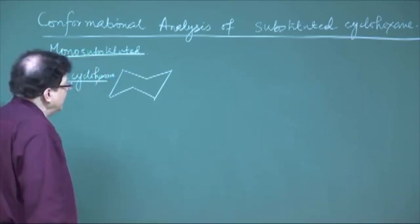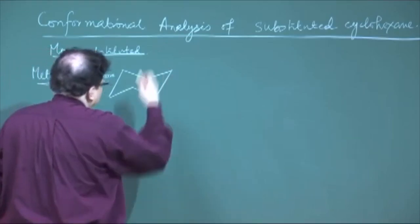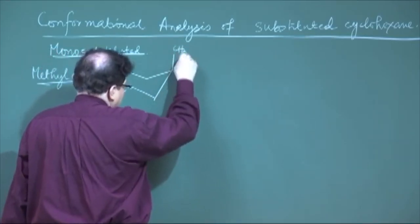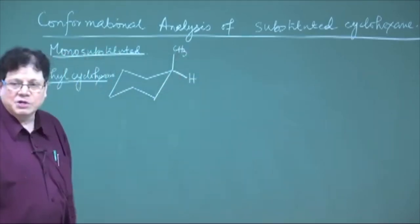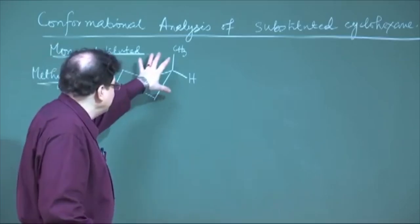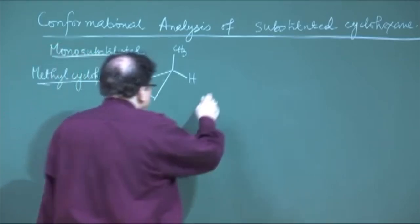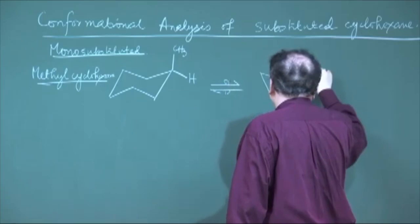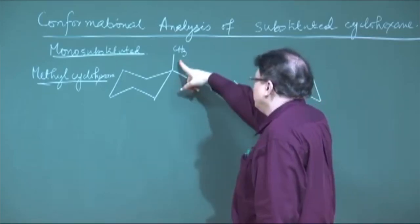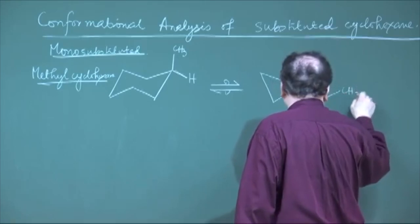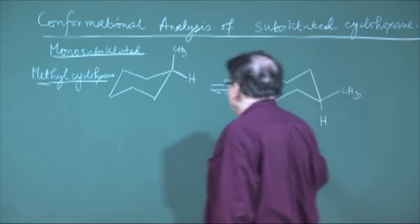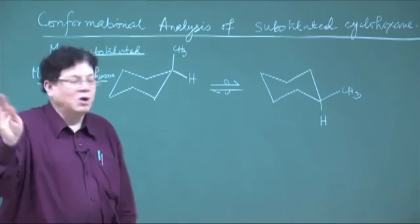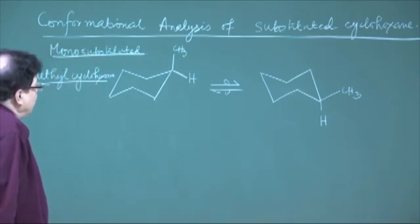First write the chair form of cyclohexane and put the methyl group. You have two options: you can put the methyl in the axial position with the hydrogen in the equatorial position, or vice versa. If I put the methyl in the axial position, then by flipping it goes into the mirror-image chair form, and the methyl becomes equatorial, but it remains beta. So there will be an equilibration between these two. These two flip forms are no longer having the same energy.